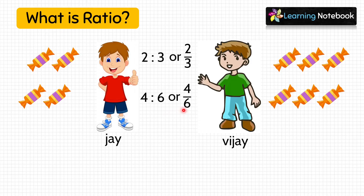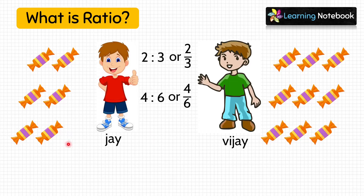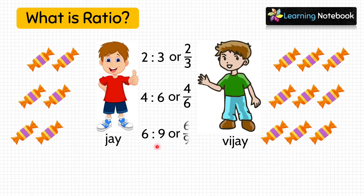Now, the next day again, the mother gave 2 more chocolates to Jai and 3 more chocolates to Vijay. So now, both of them have got how many chocolates? Jai has got 6 chocolates and Vijay has got 9 chocolates. So what is the ratio now? Yes, the ratio has become 6 is to 9 or 6 by 9.